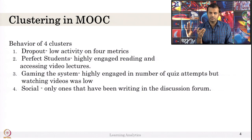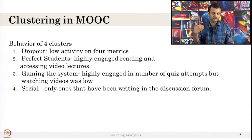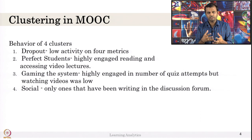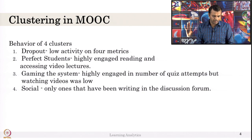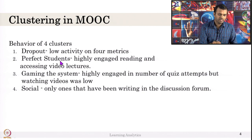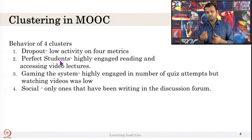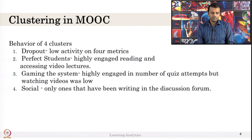Those students are not doing any reading of posts, not writing any forum messages, not watching videos, and not attempting quizzes. That is why they are not really interested in the course — so they are dropouts. How do we give the name 'dropout' or 'perfect student'? It is up to you as the researcher, based on the data, your domain expertise, and your understanding. Here they gave the name 'dropout' because all four metrics are low, so these students are mostly dropouts.